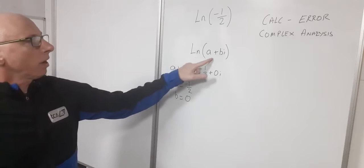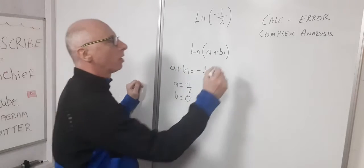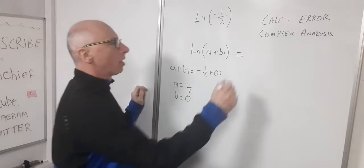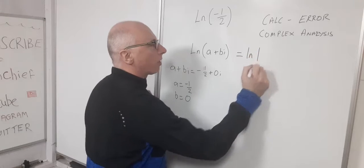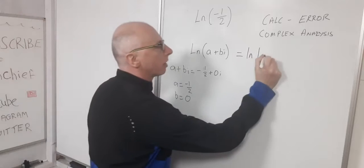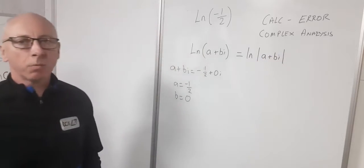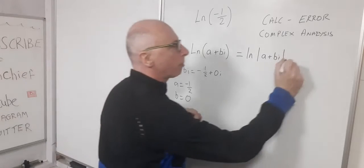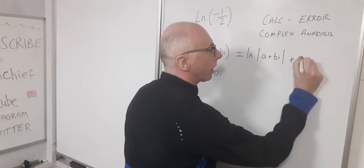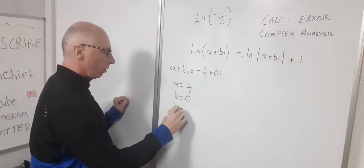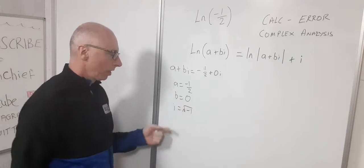Now if we want to find the log of a plus bi, we break it up into two parts. We want the log of the absolute value of a plus bi, and then on top of that we add the argument multiplied by i. Let's establish our i: i equals the square root of minus one.